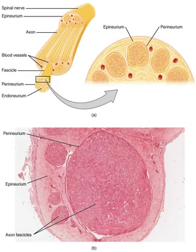Herophilos (335–280 BCE) described the optic nerve and the oculomotor nerve for sight and eye movement. Analysis of the nerves in the cranium allowed him to differentiate between blood vessels and nerves — the ancient Greek word "neuron" meaning string, plant fiber, or nerve.